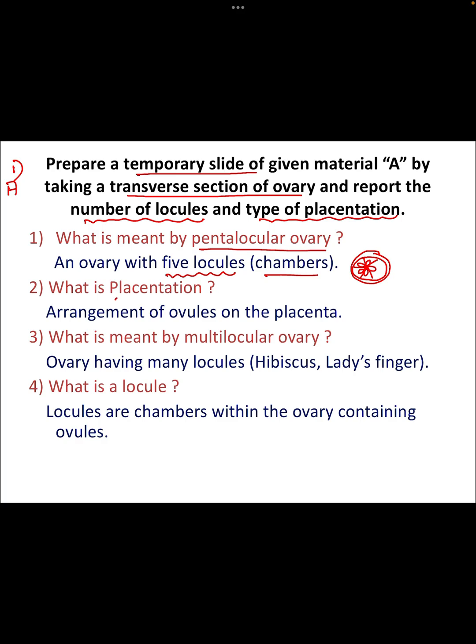The next question: what is placentation? Placentation is the arrangement of ovules on the placenta. You can see the arrangement of the ovules on the placenta — this is the placenta and this is the ovule.